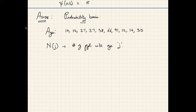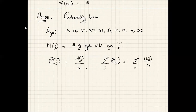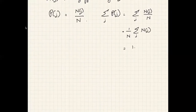The probability of finding a person of a certain age j is P(j) = N(j)/N, where N is the total number of people. The advantage of defining probability this way is that the total probability is automatically equal to one, because the sum over j of N(j)/N equals N/N = 1. So the total probability equals one by definition.